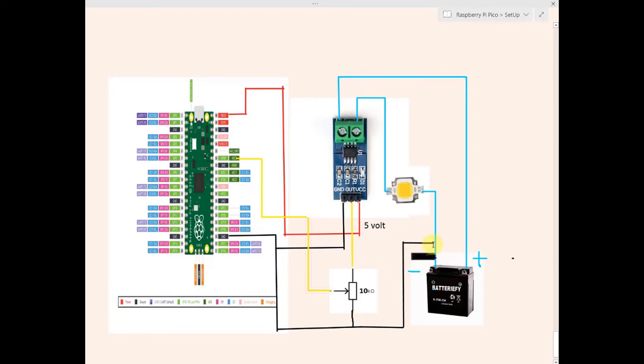And the negative terminal of the battery is connected to the Raspberry Pi Pico's ground pin so as to create a common reference ground point at this location and this is given to the ground of the sensor.